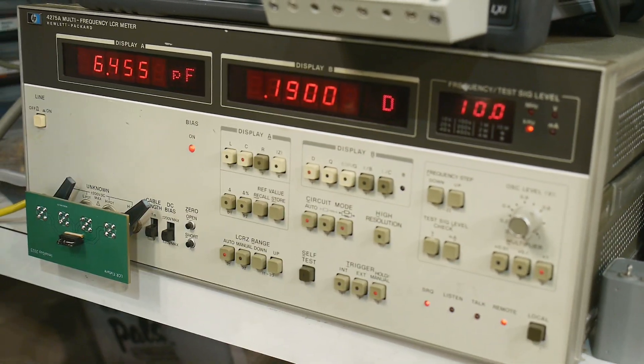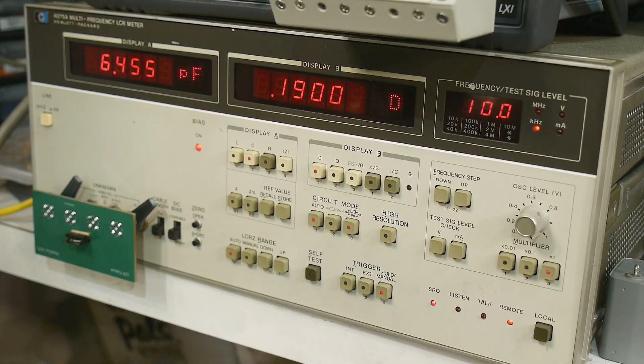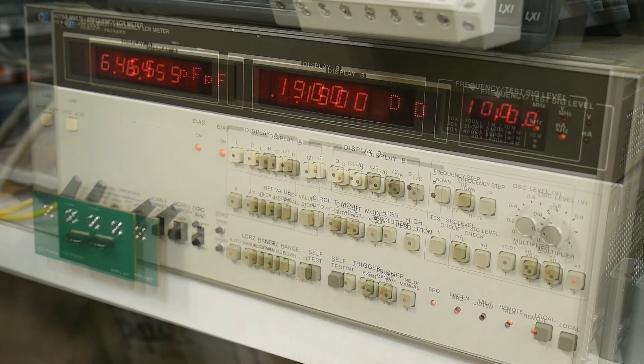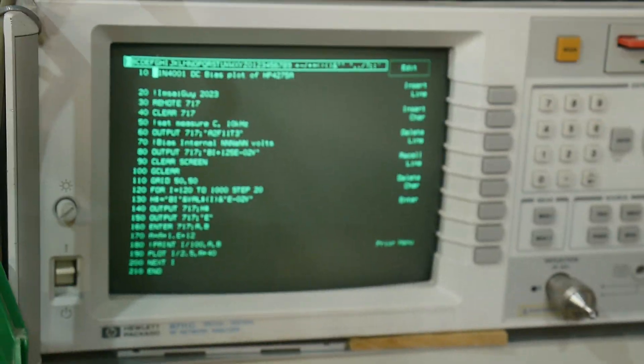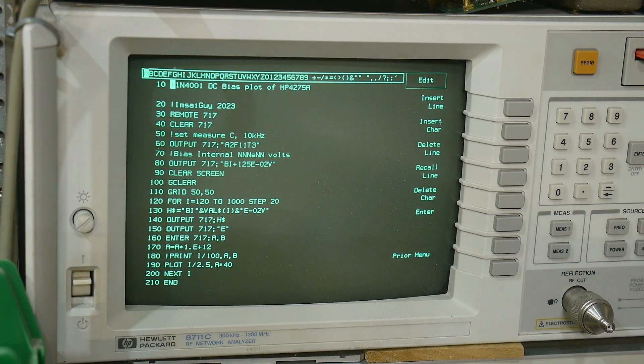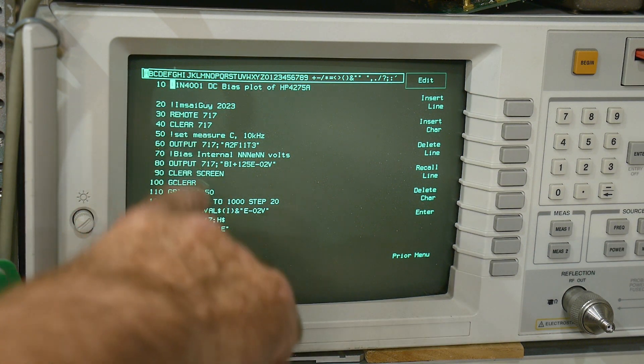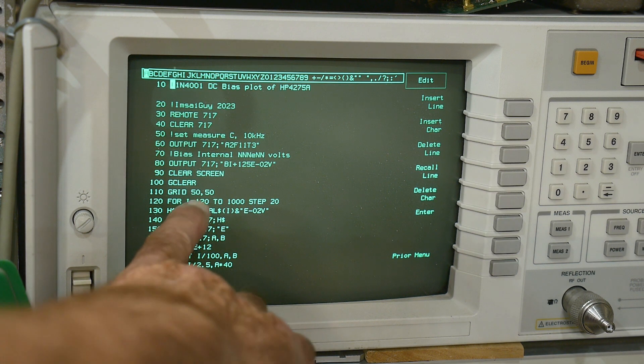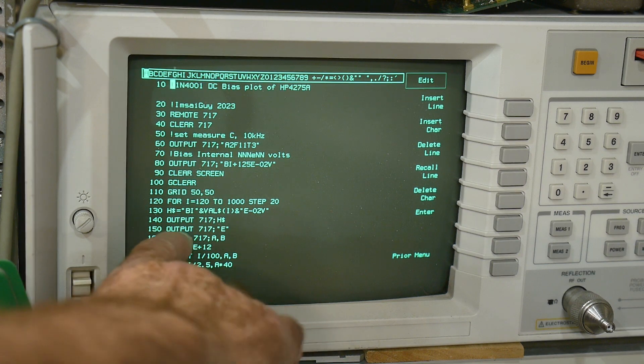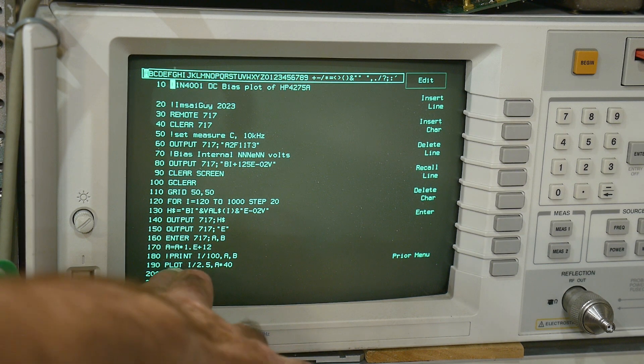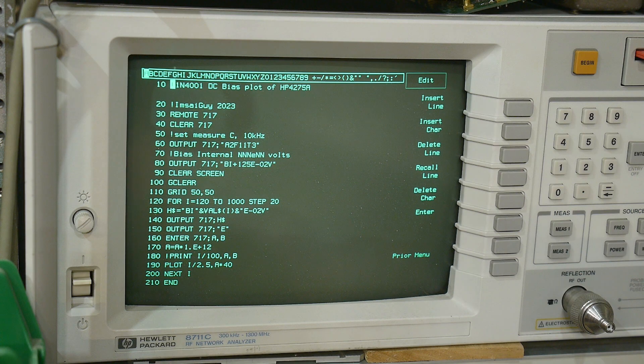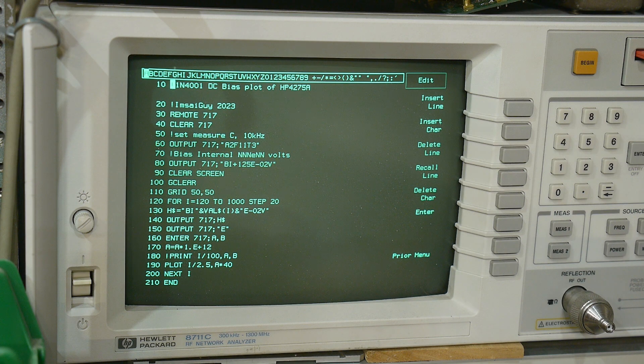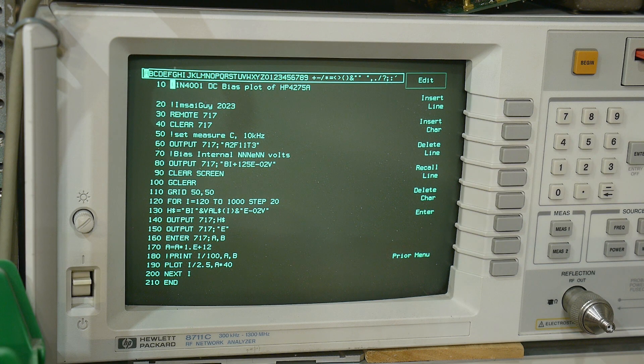So I do have DC bias in my instrument, which is really, really nice. People might want to see this program, so I'll zoom in on it. There you go. I do a clear screen and a G clear, which is graphics clear. And then I say grid 5050, and then I do a plot command. And you need to scale it for the right values. There you go.